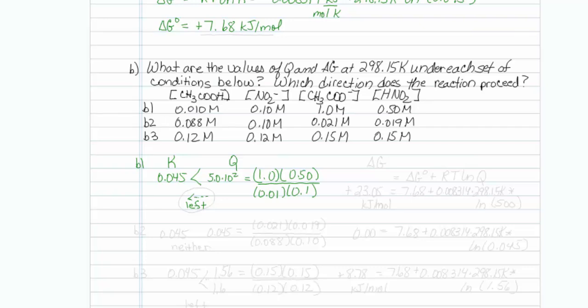But let's check that against the value of the free energy. The formula for free energy is that it is equal to free energy at standard state plus RT natural log of Q. I have my free energy at standard state, that was the 7.68 I already calculated, plus 0.008314 times 298.15 K times the natural log of 500.